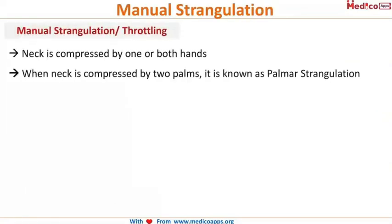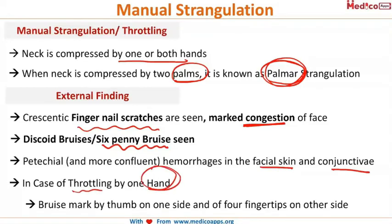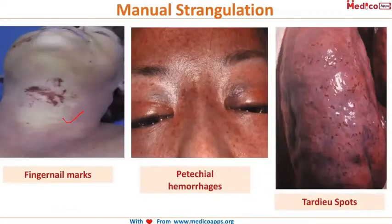In manual strangulation, the neck is compressed by one or both hands of the assailant. When compressed by two palms, it is known as palmar strangulation. Externally, there are fingernail scratches and marked congestion on the face, along with the six penny bruise. Petechial hemorrhages are seen in the facial skin and conjunctivae. When throttling is by one hand, a bruise marked by the thumb is on one side and four fingers on the other side of the neck.